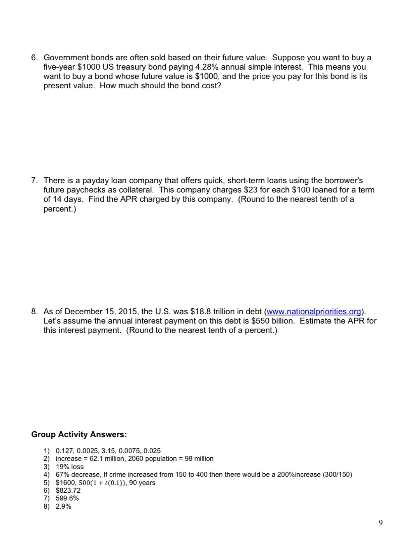Number six. Government bonds are often sold based on their future value. So suppose you want to buy a five-year $1,000 U.S. Treasury bond that pays 4.28% annual simple interest. This means you buy a bond whose future value is $1,000. The price you pay for the bond is its present value. How much should the bond cost?